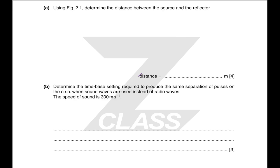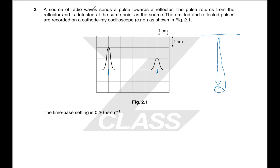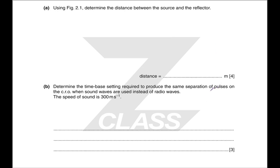Now we have a radio source. Determine the distance between the source and the reflector. We have a source here and a reflector; it is detected at the same point as the source, so what it's done in that meantime is gone there and back again. We're told one centimetre is 0.20 microseconds, so four centimetres is 0.8 microseconds — that is the time for radio waves travelling at the speed of light to go twice the distance to the reflector. From that, you can figure out how far away the reflector is.